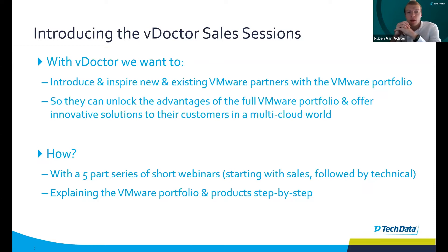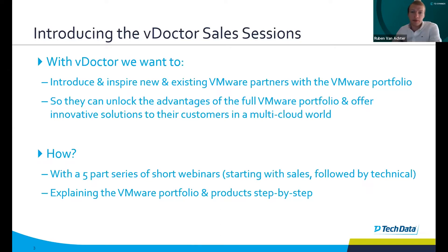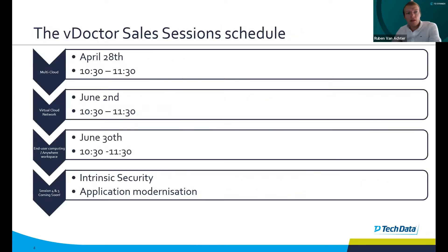How are we going to do that? With a five-part series of short webinars, first starting with the sales sessions and afterwards followed up with technical sessions, which will probably start during Q3 and Q4. Those sessions will explain the VMware portfolio and products step by step. Here you can see an overview of the session schedule — we've already planned three sessions: multi-cloud, virtual cloud network, and end-user computing. Sessions four and five are coming soon.